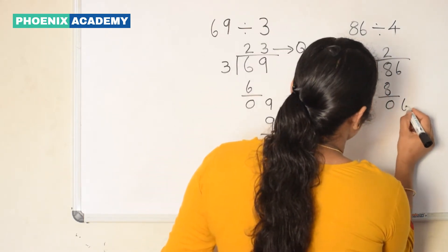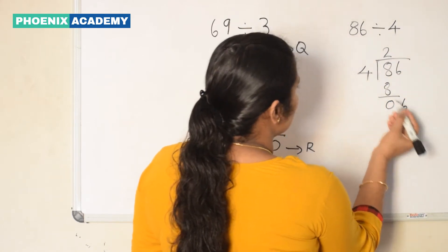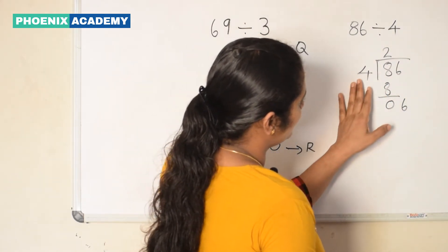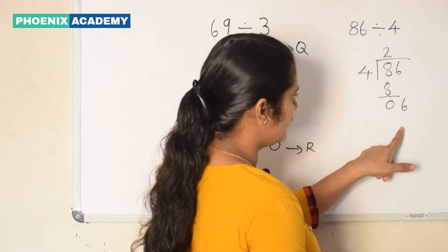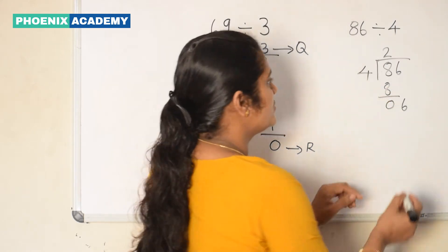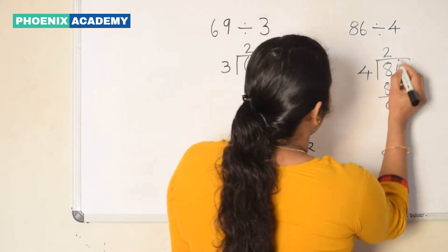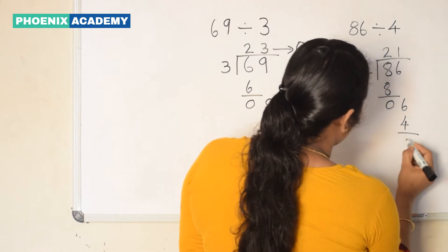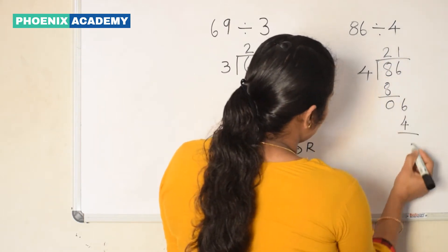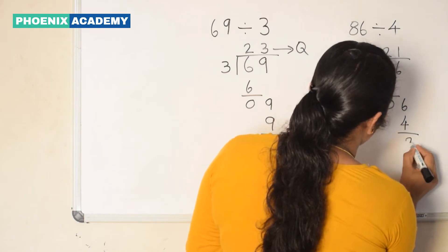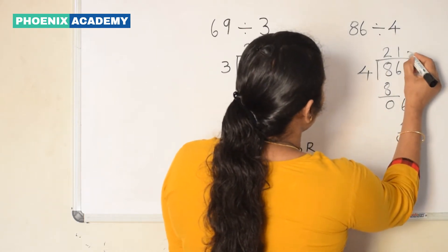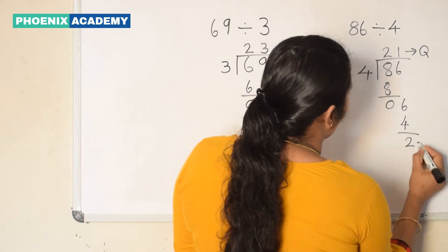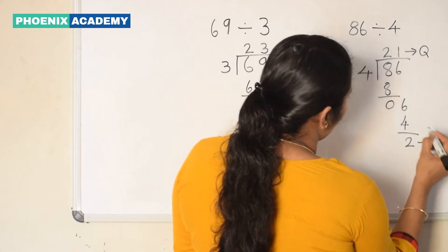Bring down the 1s digit: 6. 6 divided by 4. 1 4s is 4. 2 4s are 8. So we take 1 and write 4 below the dividend. Then subtract. 6 minus 4 is 2. Here we get 21 as the quotient and 2 as the remainder.